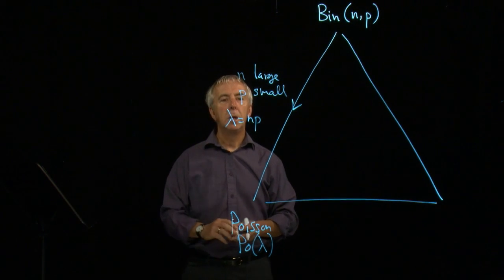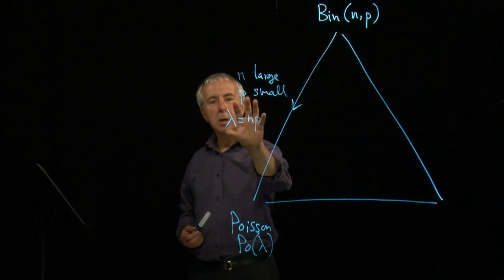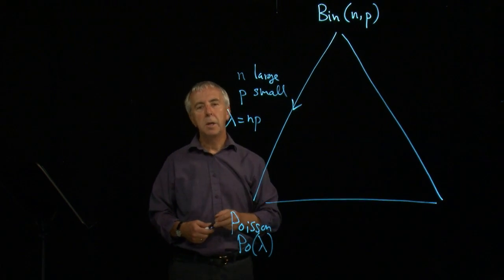Lots of experiments. Each time the probability of a success is very small. We take the total number of successes we expect and we use that in the Poisson distribution.